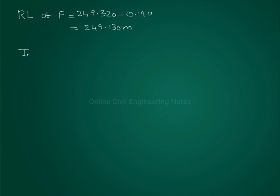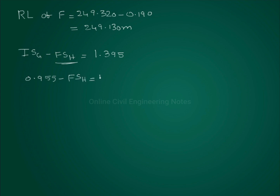Next, intermediate sight at G minus fore sight at H is equal to fall value at H, which is 1.395. Fore sight at H is not known to us. Intermediate sight at G is given as 0.955, and fore sight at H station is equal to 2.350.